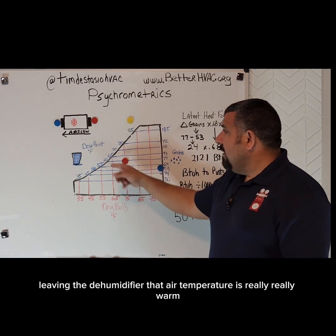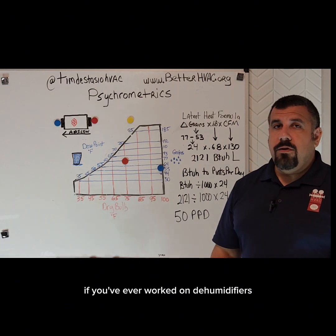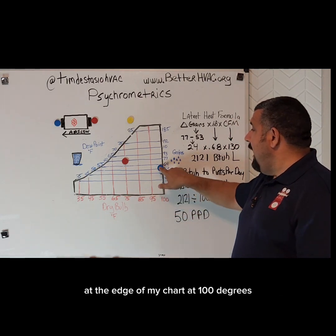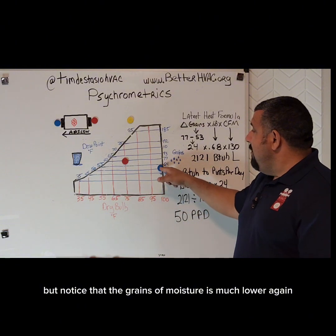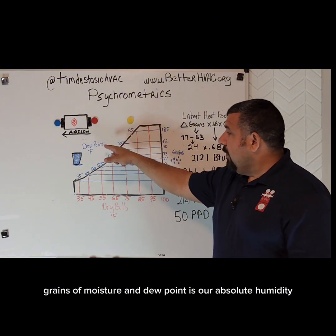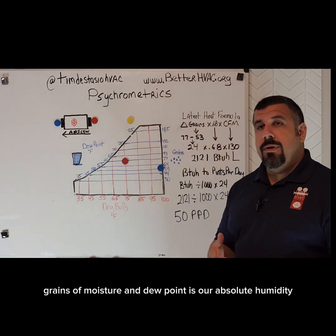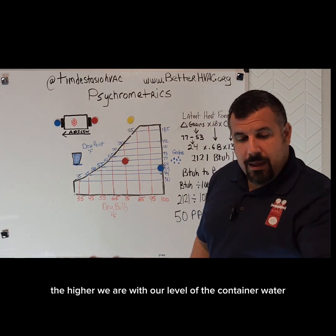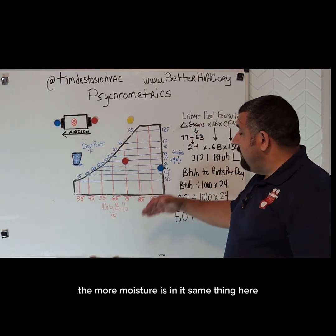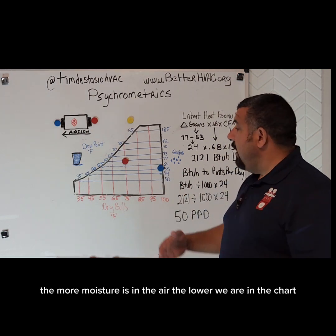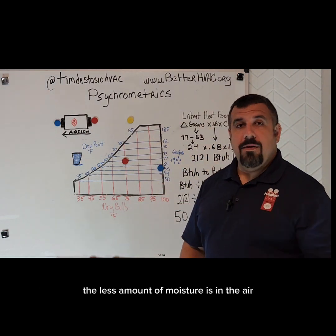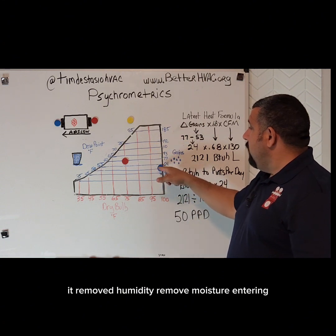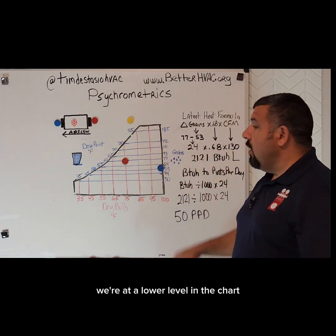Leaving the dehumidifier, that air temperature is really, really warm. If you've ever worked on dehumidifiers, you know that they put out hot air. So my dry bulb temperature is going to be way up here at the edge of my chart at 100 degrees. But notice that the grains of moisture is much lower. Grains of moisture and dew point is our absolute humidity — like having a container of water. The higher the level, the more moisture is in it. The higher we are in the chart, the more moisture is in the air; the lower we are, the less moisture. So our dehumidifier is doing its job — it removed humidity and moisture.